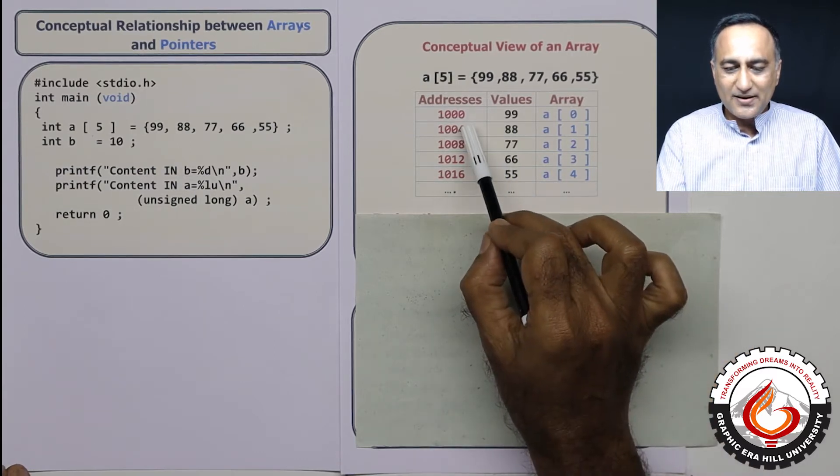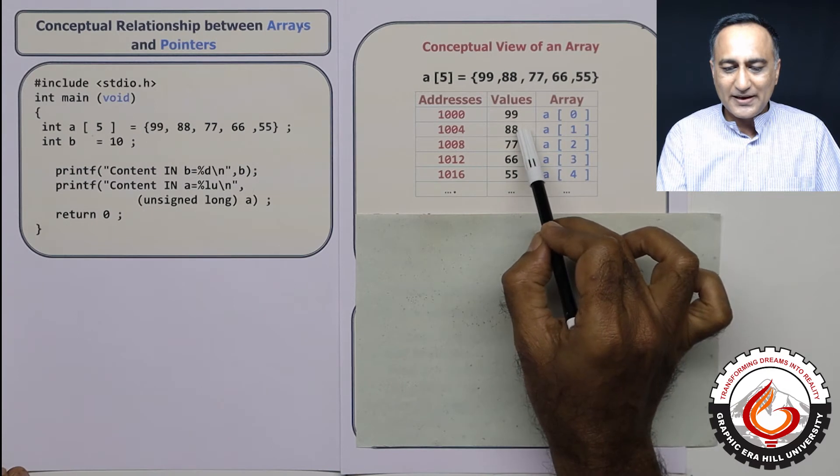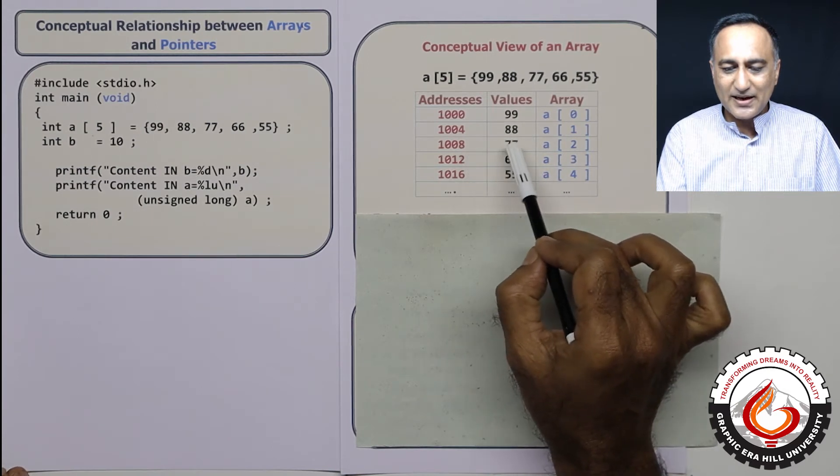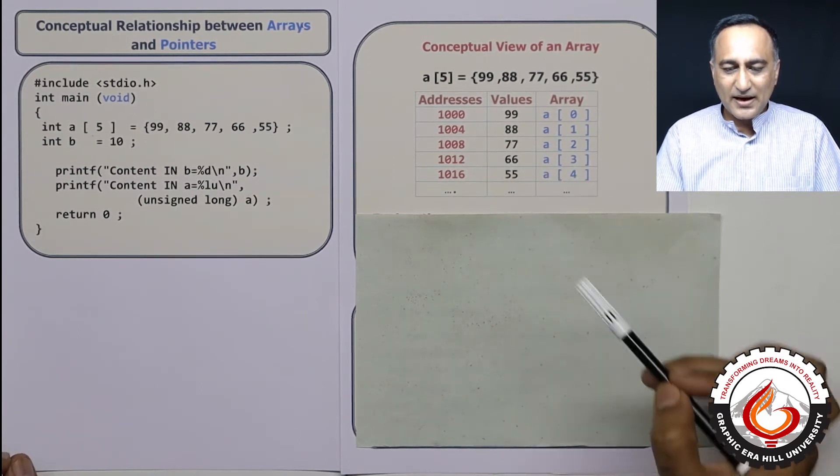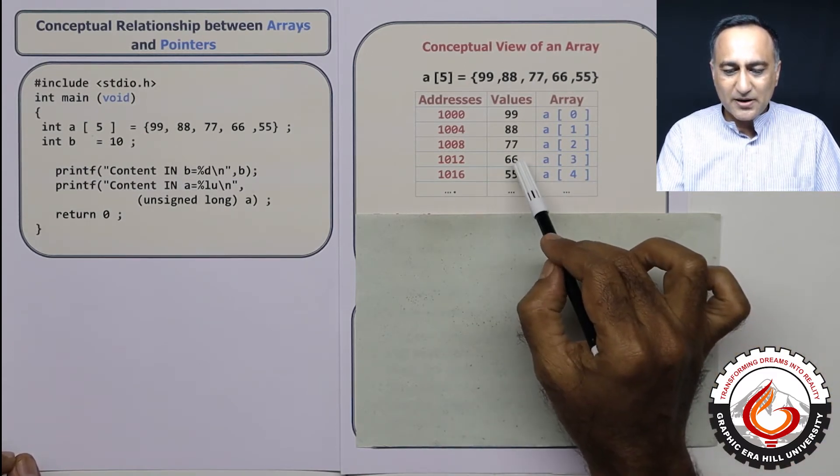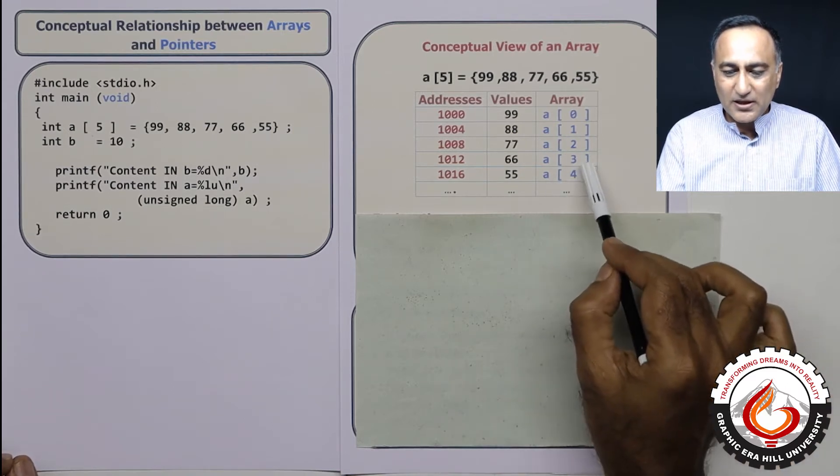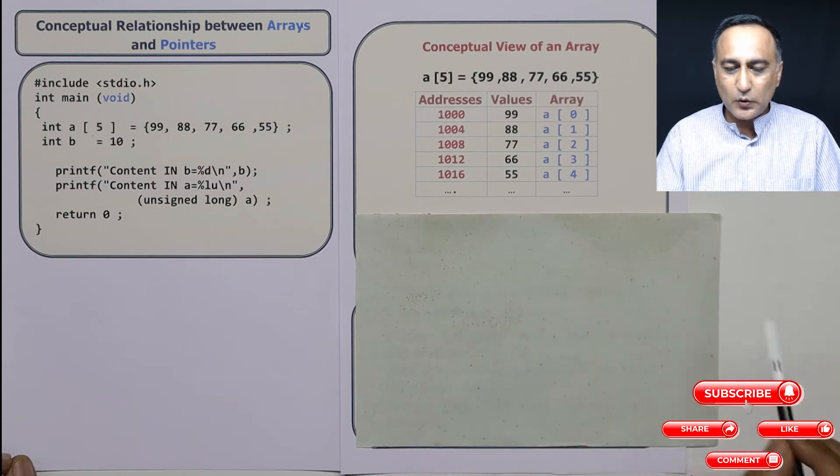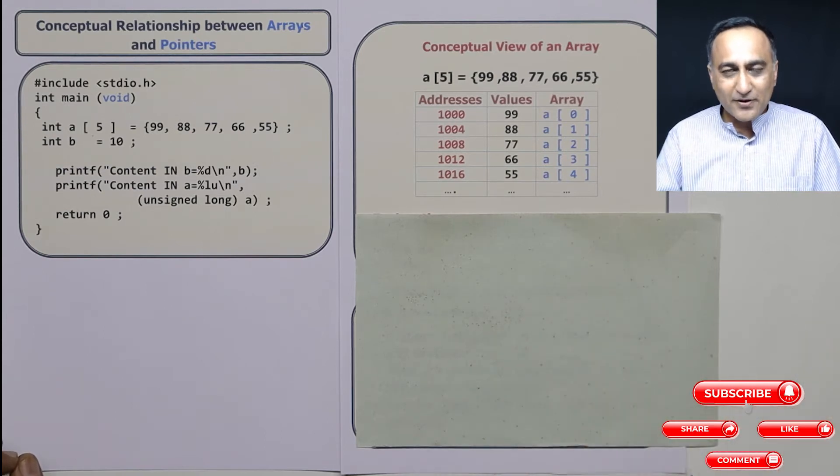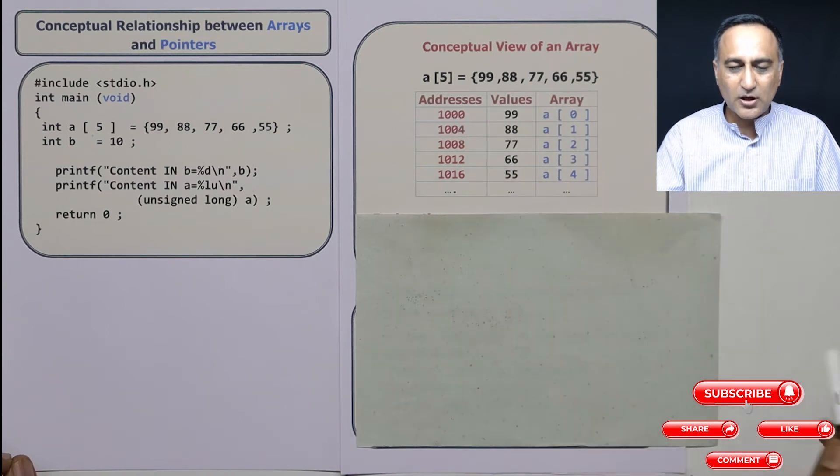So at address 1000, I have 99. At address 1004, I have 88. At address 1008, I have 77 and so on. So if I say A of three, I am referring to 66. If I say address of A of three, I am referring to 1012. If I am referring to address of A of zero, I am referring to 1000.